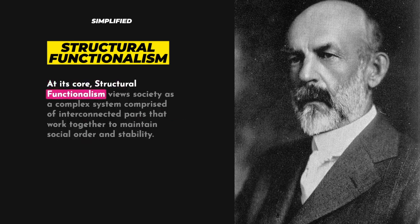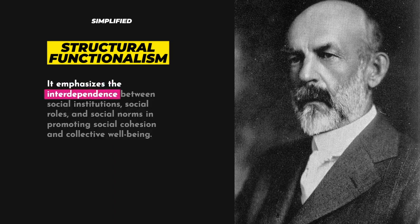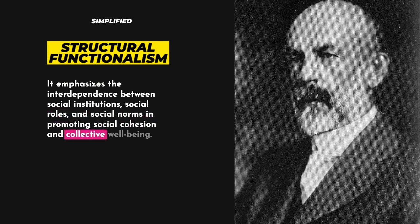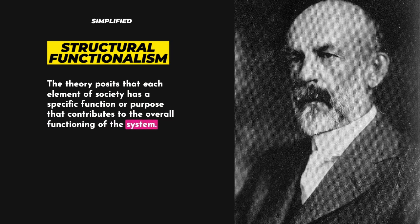At its core, structural functionalism views society as a complex system comprised of interconnected parts that work together to maintain social order and stability. It emphasizes the interdependence between social institutions, social roles, and social norms in promoting social cohesion and collective well-being. The theory posits that each element of society has a specific function or purpose that contributes to the overall functioning of the system.